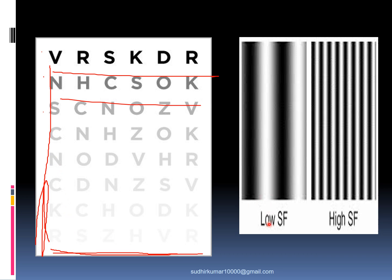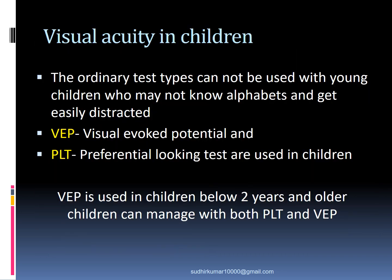Low spatial frequency and high spatial frequency contrast sensitivity charts are used to detect various optic nerve diseases. Evaluation of vision in pre-verbal children can be challenging because they cannot read ordinary test types and are also uncooperative. For them, either visual evoked potential (VEP) or the preferential looking test is used.